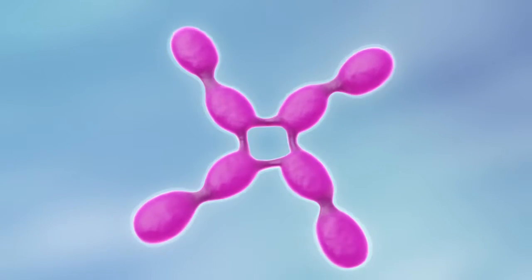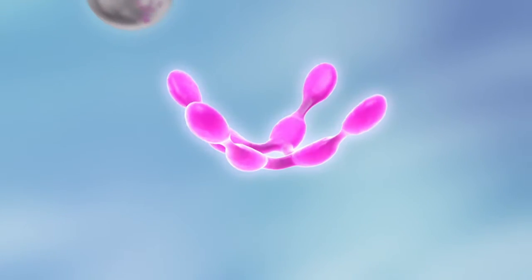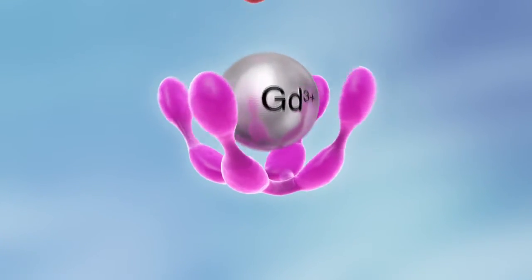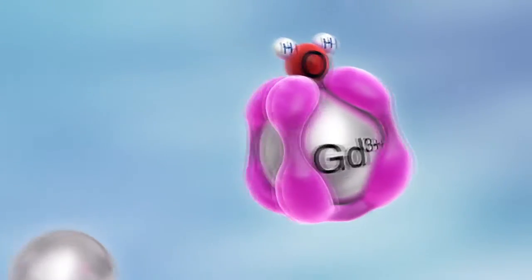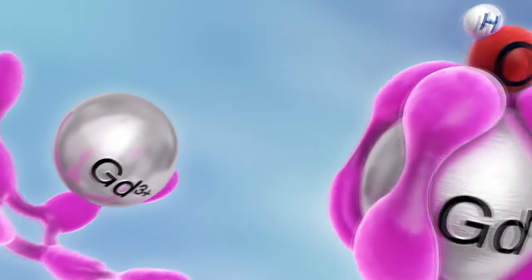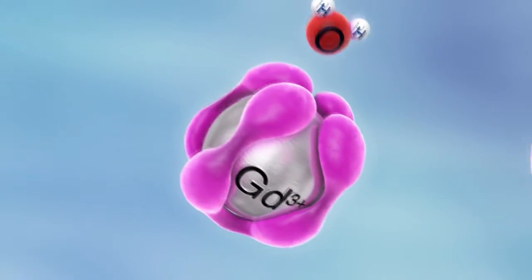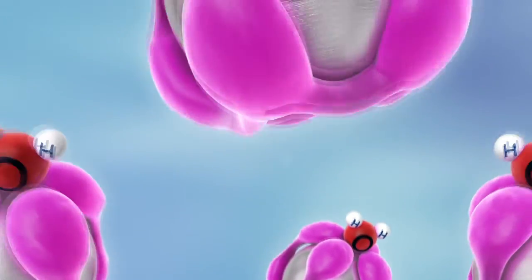Macrocyclic contrast media also form a coordination complex with eight bonds with a gadolinium ion. But, unlike the linear media, they completely encircle the gadolinium ion in an even more stable manner, like a cage.